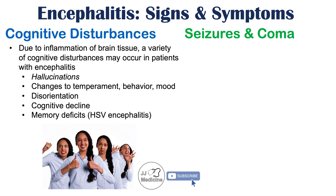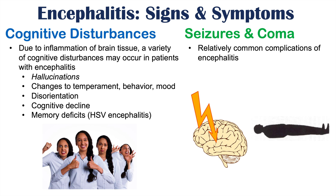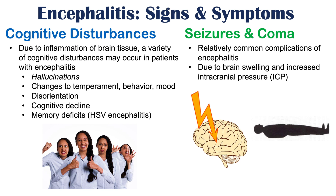Patients can deteriorate to the point of seizures and coma, which are relatively common complications of encephalitis. This is due to brain swelling and increased intracranial pressure or ICP. The brain is enclosed within a solid cranium, so as the brain swells there is no place for it to go, leading to increasing intracranial pressure that can cause seizures and coma.